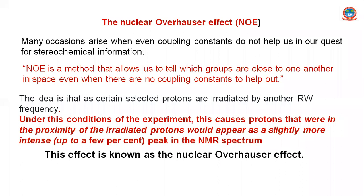If two groups are near to each other in space, this NOE phenomenon works very well. In simple concept, you select two groups — they can be two protons, two different groups, or one proton and a different group. Out of these two, you irradiate one of them using a second radio wave, which can be set up with the instrument.